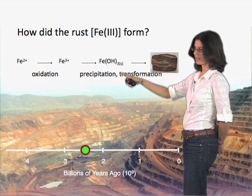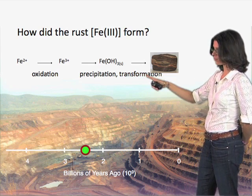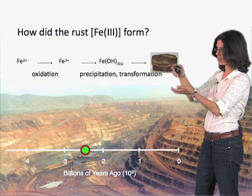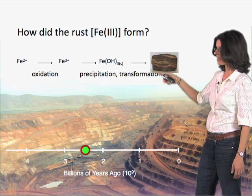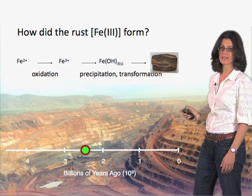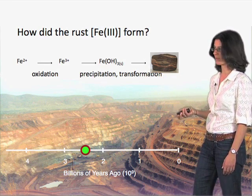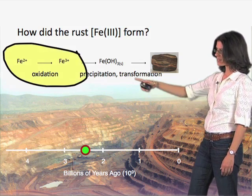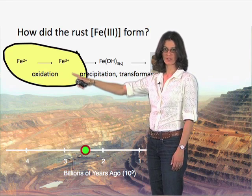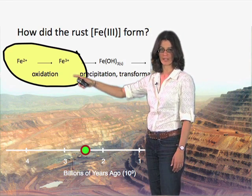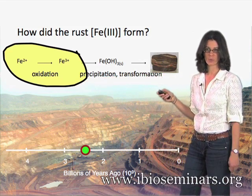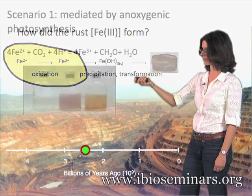Rust. And over time, this mineral transformed and changed into different types of minerals, became compacted and mingled with others, and wound up in these rocks that we today know as banded iron formations. But this initial step is the critical one in terms of giving us some insight into microbial activities on the ancient Earth. Let's think about two scenarios where microorganisms might have been involved.